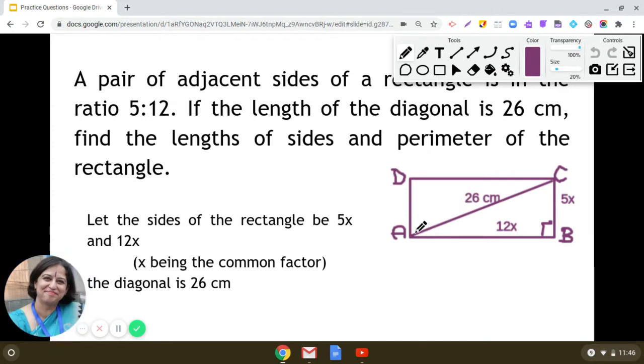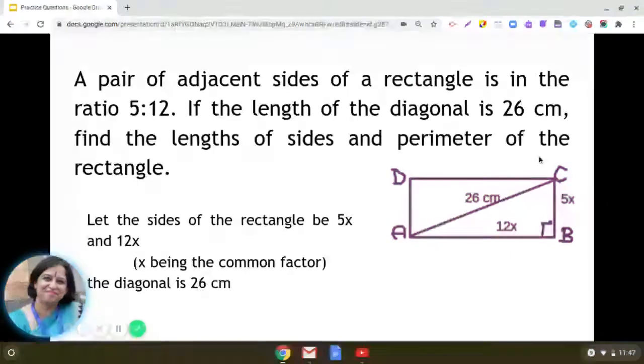Also you can see that AC is the diagonal which we have marked as 26 cm. Now you tell me in a rectangle ABCD each angle is 90 degree. So can you tell me in the right triangle ABC what relationship we can find between the sides? Yes, you will be applying which theorem? Great, so we can use the Pythagoras theorem